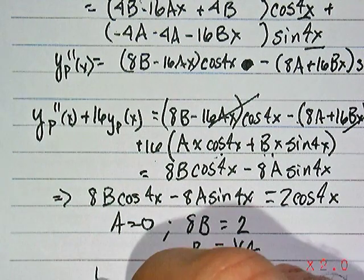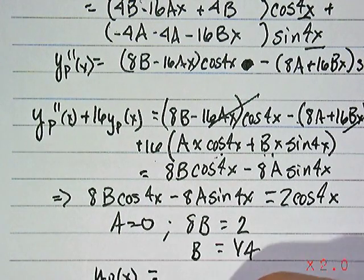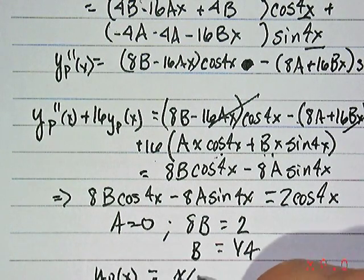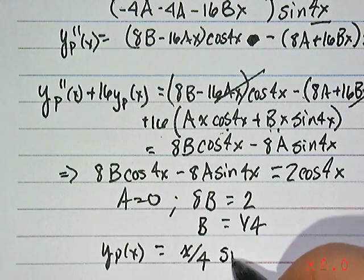So, the particular solution, therefore, a is 0, so all we're left is x, 1 fourth times x, or x divided by 4, times the sine of 4x.